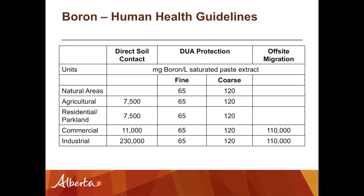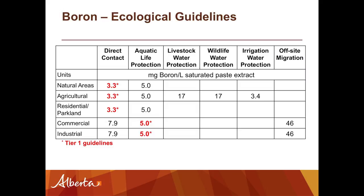The new numbers: for human health, the numbers are actually quite generous because boron is really not that toxic to humans. For ecological guidelines, it's another story — that backs up the fact that earlier guidelines were based on plant toxicity, and plants turn out to be pretty much the most sensitive species, similar to some soil organisms. The guidelines for sensitive land uses are going to be 3.3 milligrams per liter, and for commercial and industrial, 5 milligrams per liter, based on an aquatic life protection pathway.